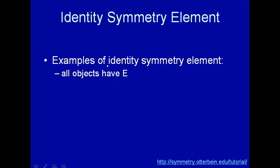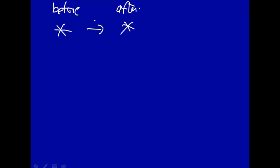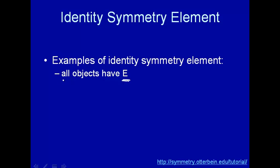Let's talk about the identity symmetry element, given the symbol E. The identity symmetry element means you don't do anything — before and after are exactly the same. There's no rotation, no reflection, no inversion, or anything else. Therefore, all objects, all molecules, anything you can draw has an identity symmetry element, because if you take that element and don't do anything to it and compare, it's the same. So all objects have an identity symmetry element.